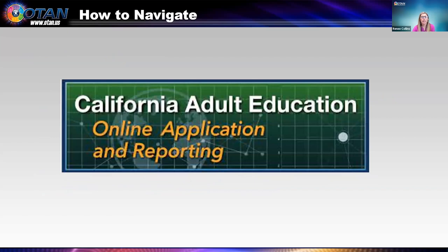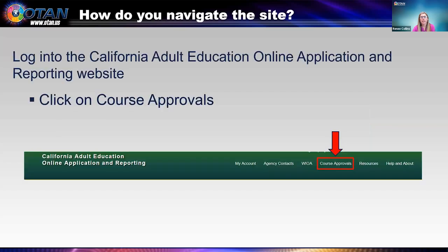Now it's time to walk through what you will see on the course approval site itself. This website is caadultedreporting.org — that's our online application and reporting site. To log in, you'll first want to log into the OAR site. On the navigation bar you can see course approvals under the red arrow — you'll want to click on course approvals to enter that area. Anyone assigned by the authorizer at your agency is able to access course approvals. If your agency has not had previous access, users will need to be set up via a course approval form that your CDE program consultants will have.